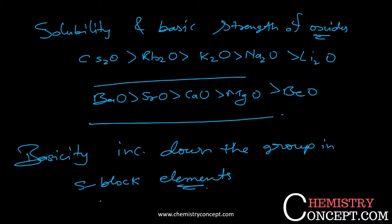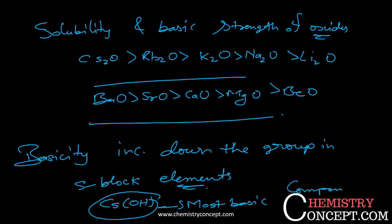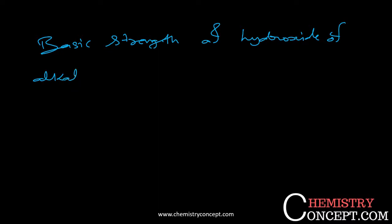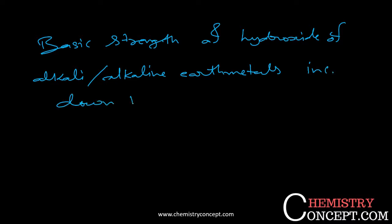One more important thing — cesium hydroxide is the most basic compound known so far. For hydroxides also, as we go down the group, the basic strength of hydroxides of alkali and alkaline earth metals increases down the group.